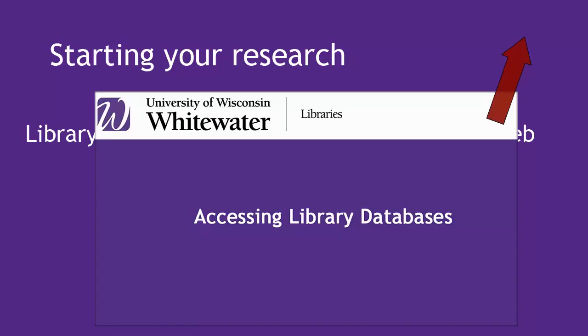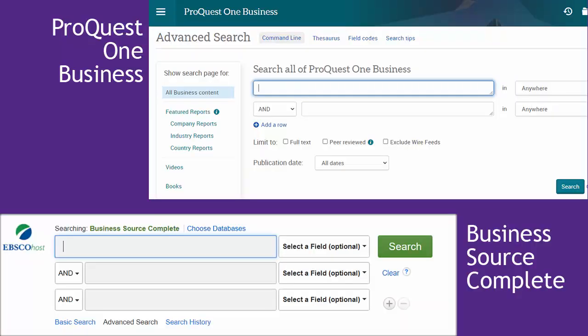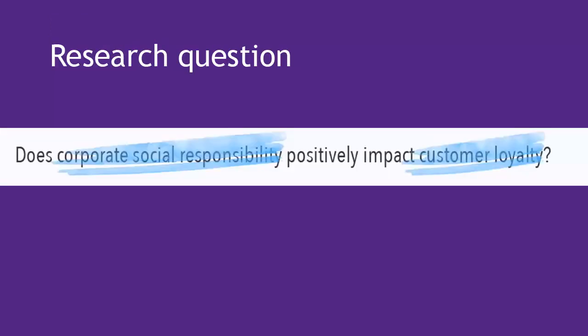Watch the Accessing Library Databases video to learn how to get to them. This video will focus on the two primary business article databases available: ProQuest One Business and Business Source Complete. The research question we developed in the previous video is: Does corporate social responsibility positively impact customer loyalty? We'll use just the major keywords or main ideas to search, not the entire research question.